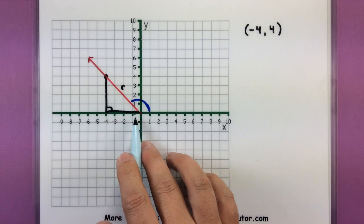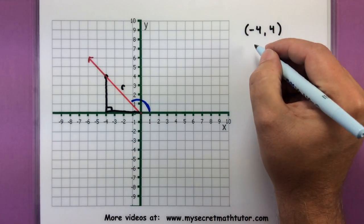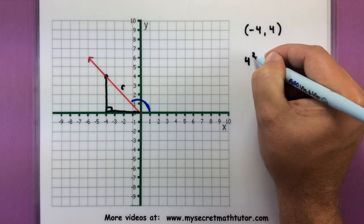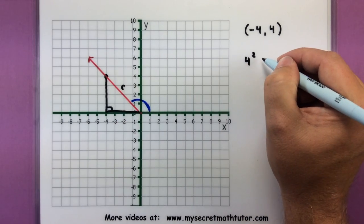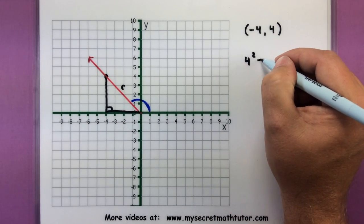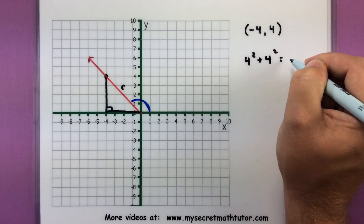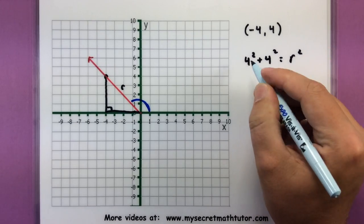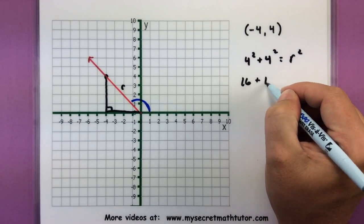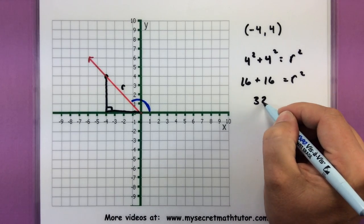Alright, so I need two sides. Looks like this side is 4. This side is also 4. Those come directly from where our point is located. And that will equal the radius squared. So 16 plus 16 equals radius squared, or 32.